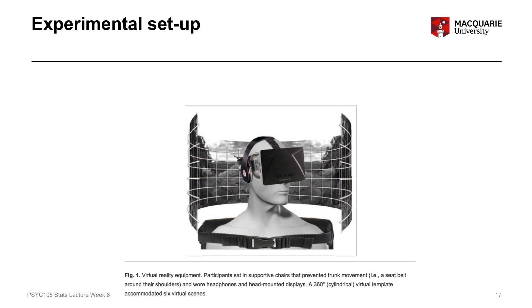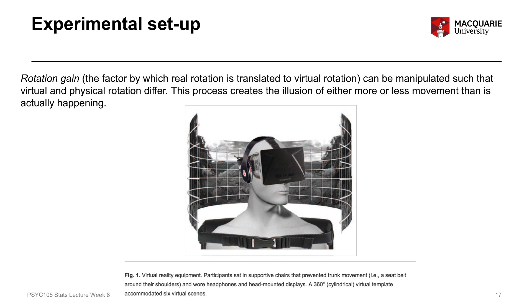What they did in terms of the manipulation was to not sync up the degree of movement in real life versus the degree of movement in the headset. This is described in the paper as manipulating the 'rotation gain' — the correspondence between the real rotation and the virtual image rotation — which creates an illusion of either more or less movement than is actually happening.